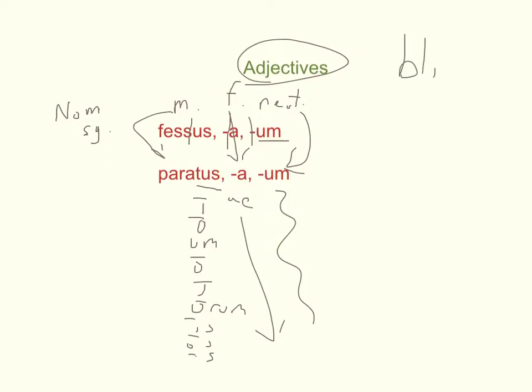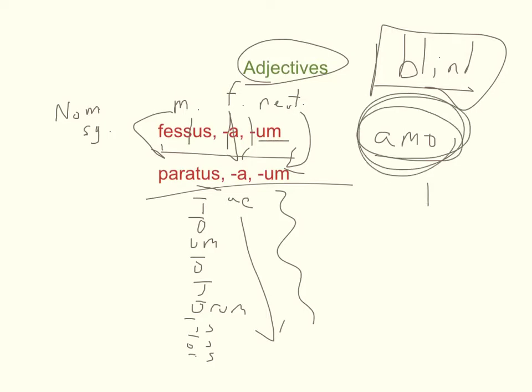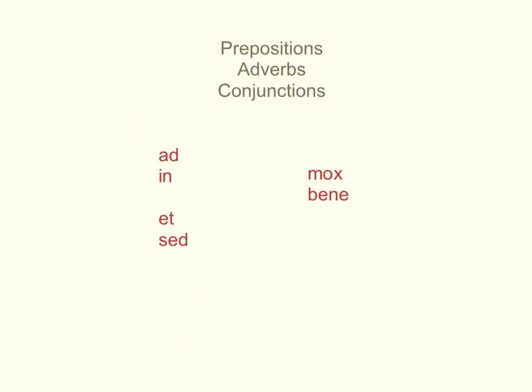But unlike in English, these words don't switch their part of speech. Unlike in English where something like blind can be a verb, like I blind you, or it can be an adjective like the blind man, or it can even be a noun like the hunter waited in the duck blind until a duck showed up. Unlike in English where that happens all the time, this, always an adjective. This, always an adjective. Amo, I love, always a verb.